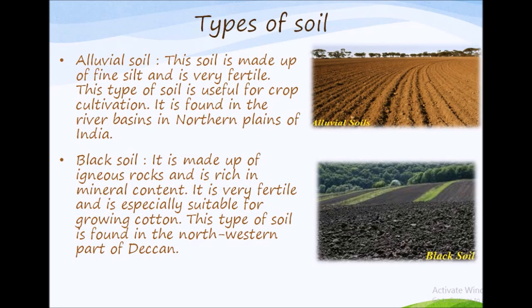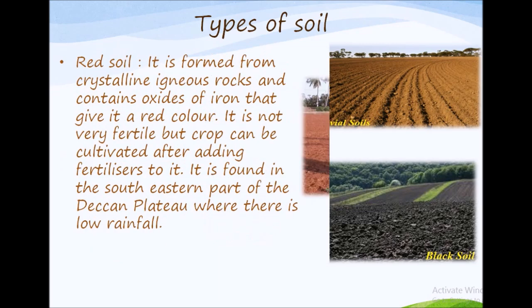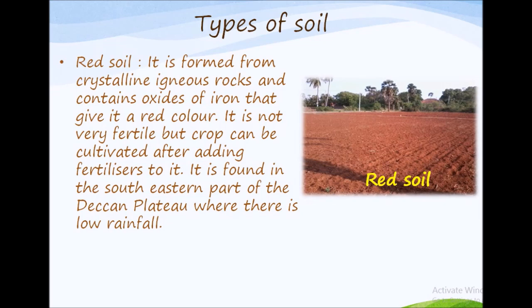Let's see the major soil types found in India. First is alluvial soil — it is made up of fine silt and is very fertile, useful for crop cultivation, and found in the river basins of the northern plain of India. Second is black soil — it is made up of igneous rock, rich in mineral content, very fertile, and especially suitable for growing cotton. It is found in the northwestern part of the Deccan. Third is red soil — it is formed from crystalline igneous rocks.